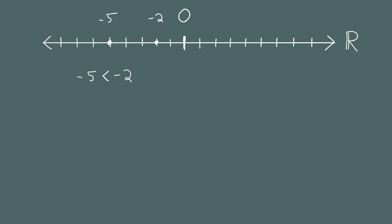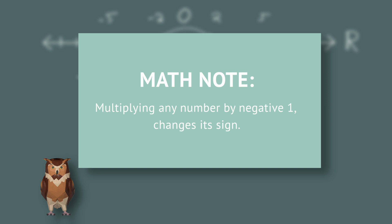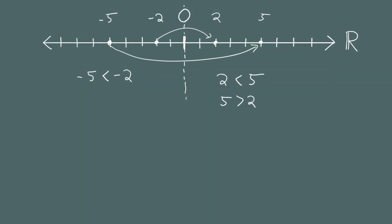Now if we multiply both numbers by negative 1, negative 5 times negative 1 gives positive 5, and negative 2 times negative 1 gives positive 2. Now 2 is to the left of 5, so 2 is less than 5 — the order has flipped. Multiplying by negative 1 is like flipping numbers about a mirror at zero. So when we multiplied negative 5 and negative 2 by negative 1, they flipped to the positive side and their order reversed.